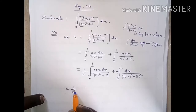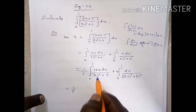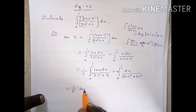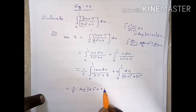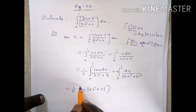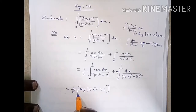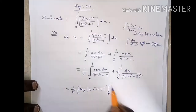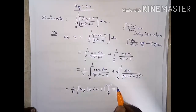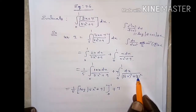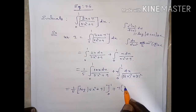Applying the formulas with limits 0 to 1: the first part gives 1 by 5 into log of modulus of (5x squared plus 9), and the second part gives 7 into 1 by a, where a equals 3, giving 1 by 3 root 5 into tan inverse.